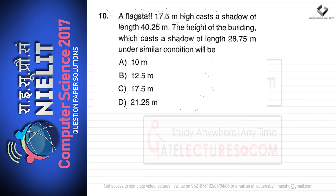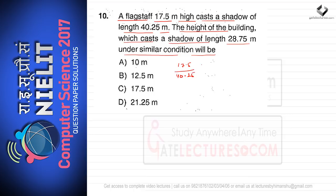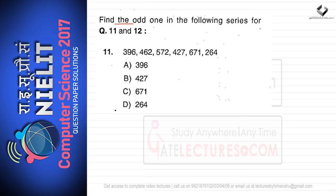The next question: a flagpole 17.5 meters high casts a shadow of length 40.25 meters. The height of a building that casts a shadow of 28.75 meters under similar conditions is found by proportion: 17.5 / 40.25 = x / 28.75. Solving gives x equal to 12.5 meters. So answer B is correct.